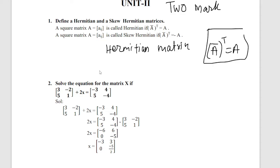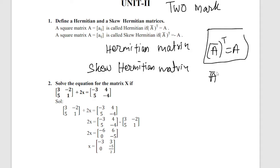Every square matrix said to be skew-Hermitian when A-bar transpose equals minus A. That is called skew-Hermitian matrix. So Hermitian: A-bar transpose = A; skew-Hermitian: A-bar transpose = minus A. Write this definition.